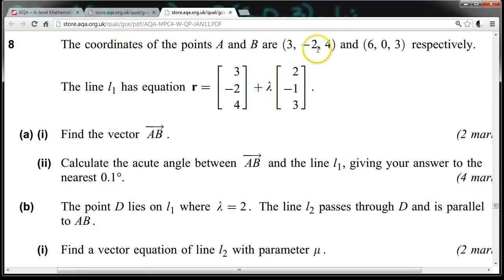The coordinates of the point A and B are (3, -2, 4) and (6, 0, 3) respectively. The line L1 has equation r = (3, -2, 4) + λ(2, -1, 3).